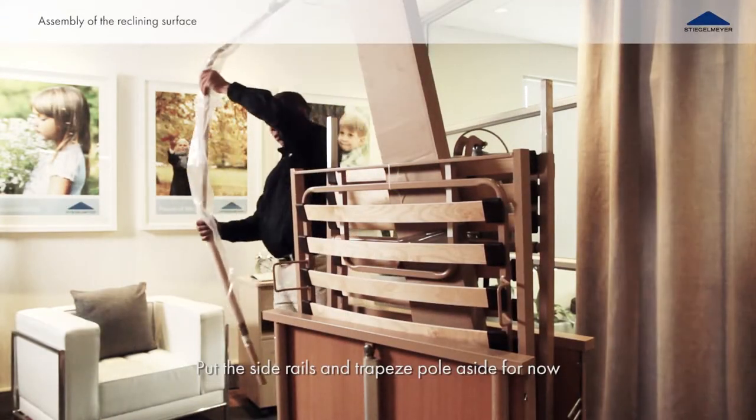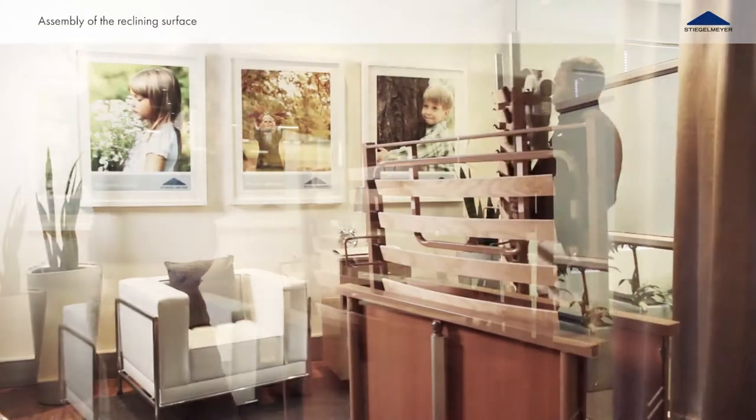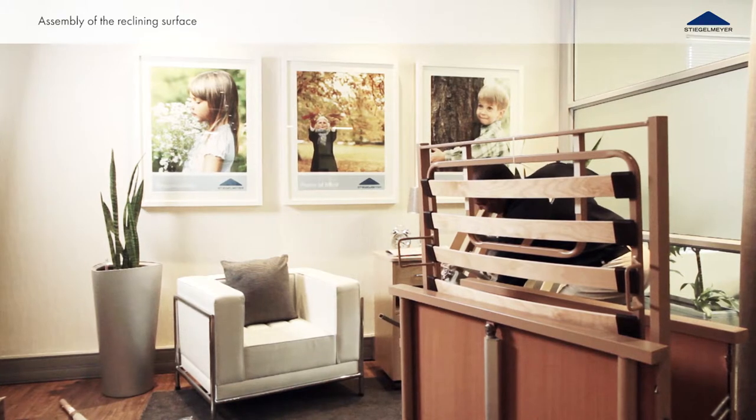Remove the side rails and trapeze pole from the storage aid. Remove the two halves of the reclining surface.